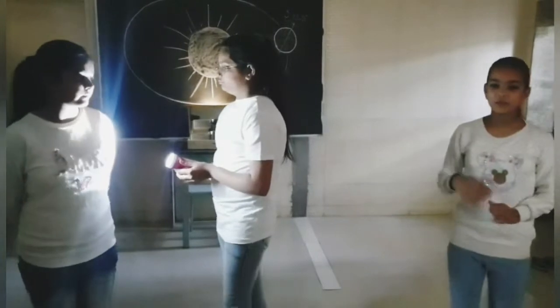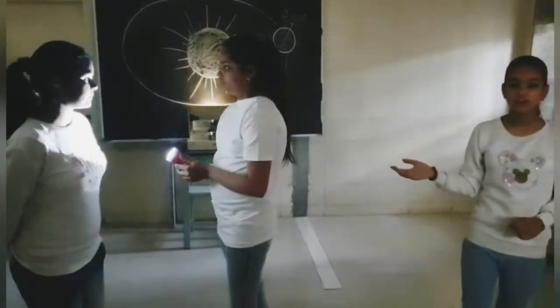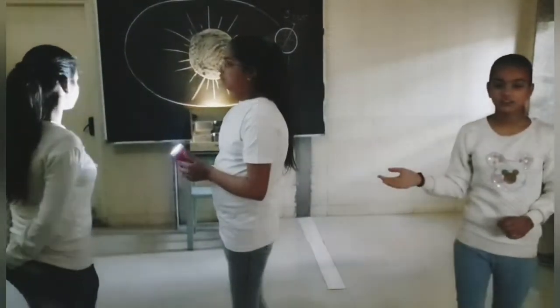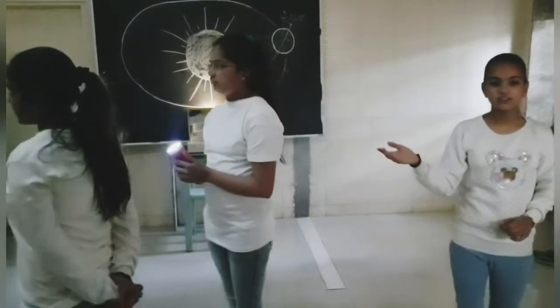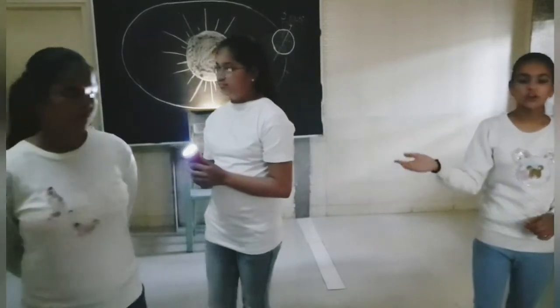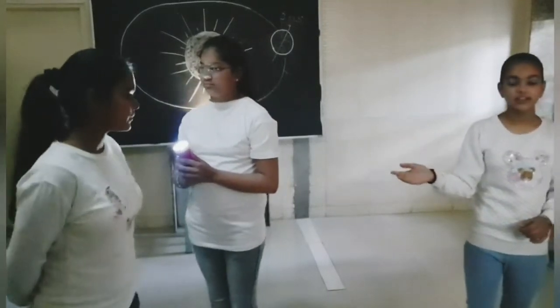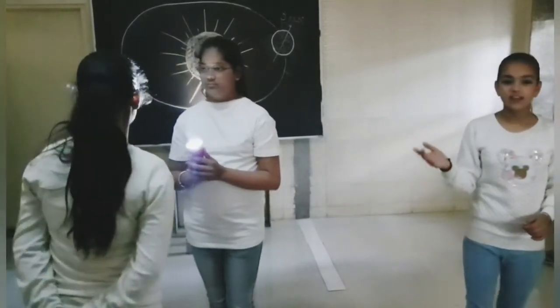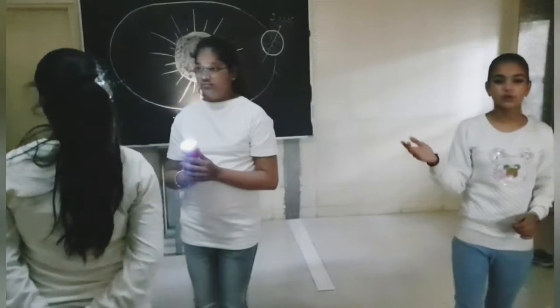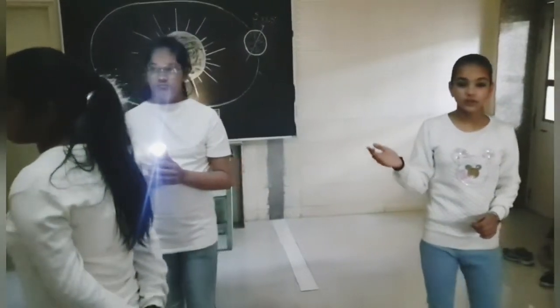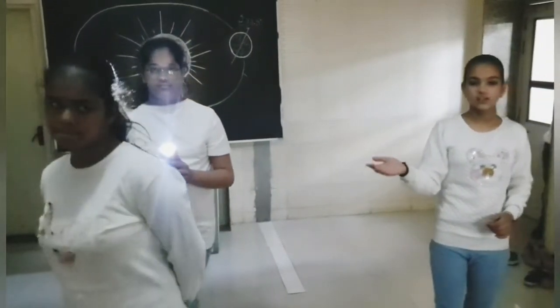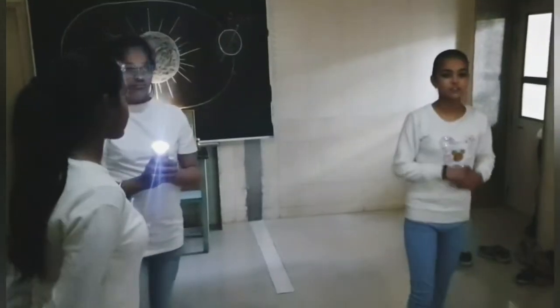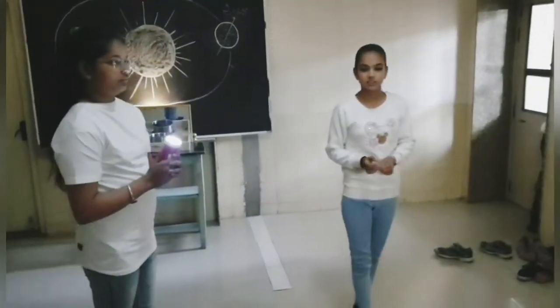Hello, I will explain the revolution of Earth. When Earth moves around the sun in its orbit, this is called revolution. It takes 365 days to complete one revolution. Due to this, a change in seasons occurs on Earth.